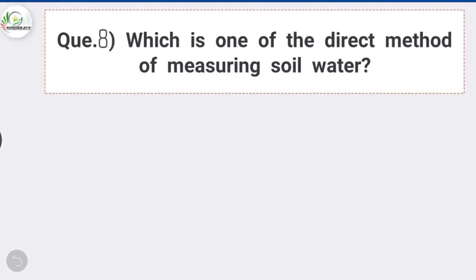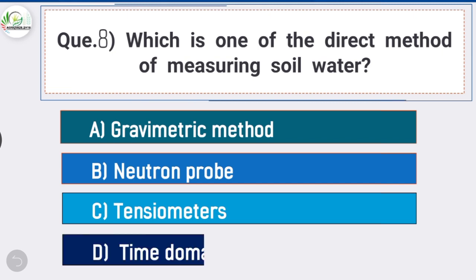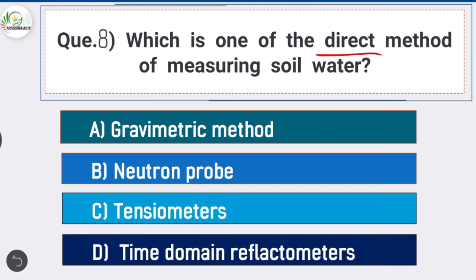Question number eight: which of the following is a direct method of measuring soil water? The answer is option A, gravimetric method. The direct method of measuring soil water is by the gravimetric method.